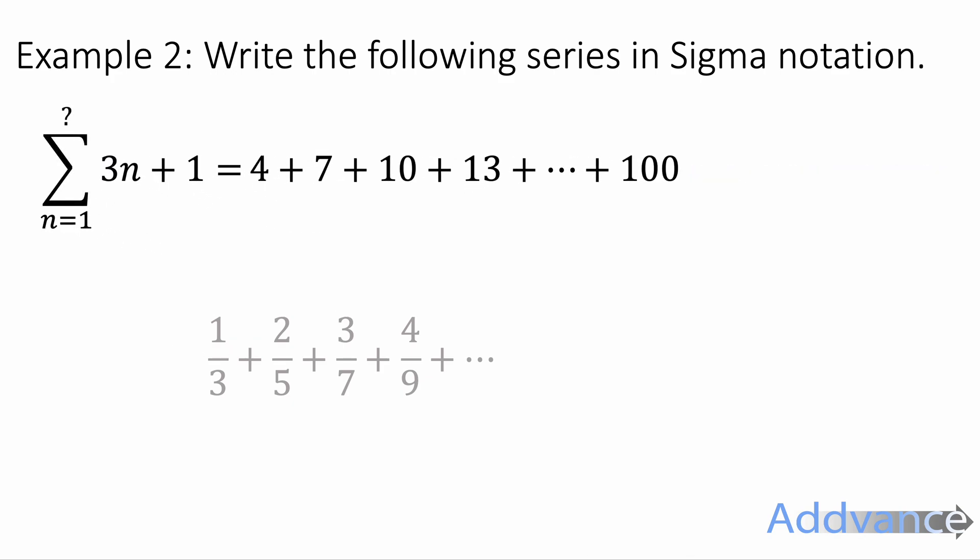And so the general nth term is 3n plus 1. So it's the sum from n equals 1 to something of 3n plus 1. We don't know what the final term is, what the final n is,